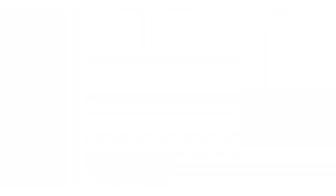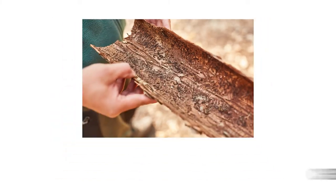If possible, you can remove a portion of the tree's bark and you may be able to observe galleries created by the bark beetles. If the adults have not laid eggs, you may still be able to apply chemical treatment. Once eggs have been laid, chemical treatment will be unable to treat bark beetles, which can often lead to the infested tree's death. However, there are still several control methods you can employ that can keep your tree alive.